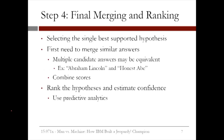Once all of the scoring algorithms are run, Watson needs to select the single best supported hypothesis. Before this can be done, similar answers need to be merged, since multiple candidate answers may be equivalent. As an example, the candidate answers Abraham Lincoln and Honest Abe refer to the same person, so the scores for these two candidate answers need to be combined. Watson should not be viewing similar answers as competing choices.